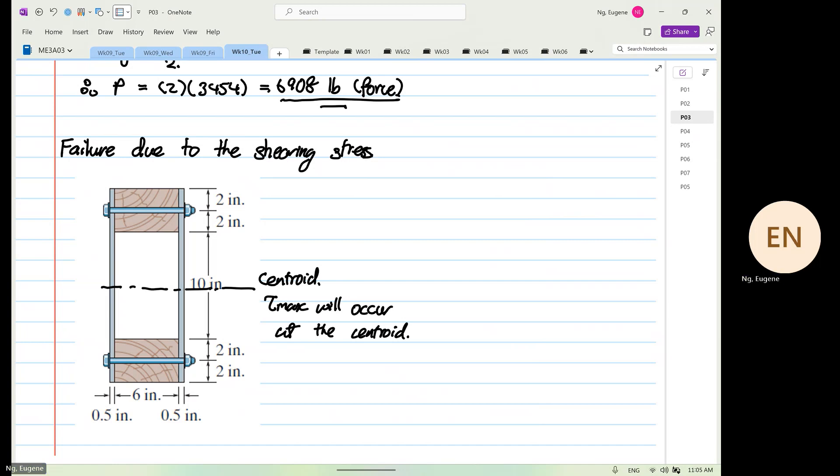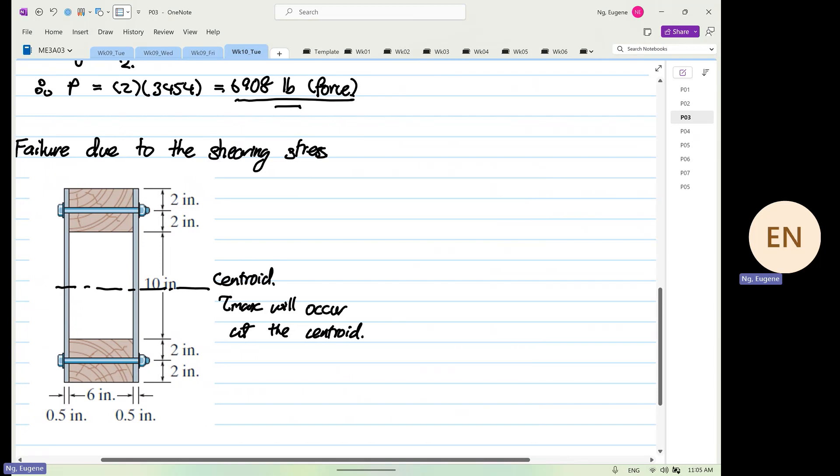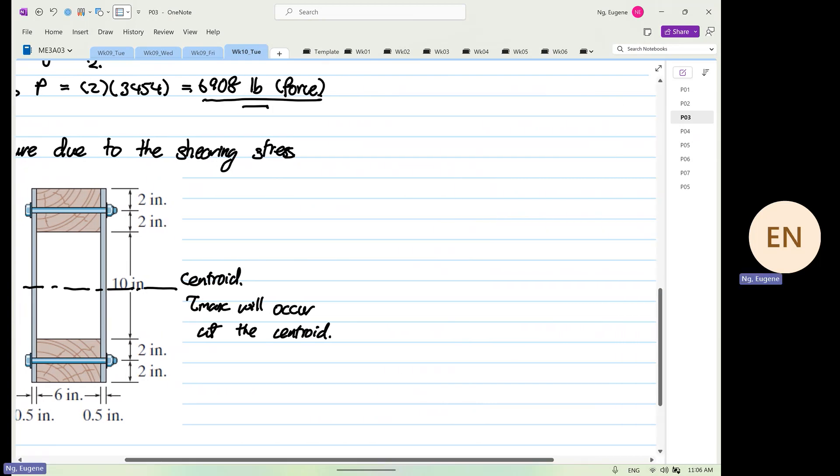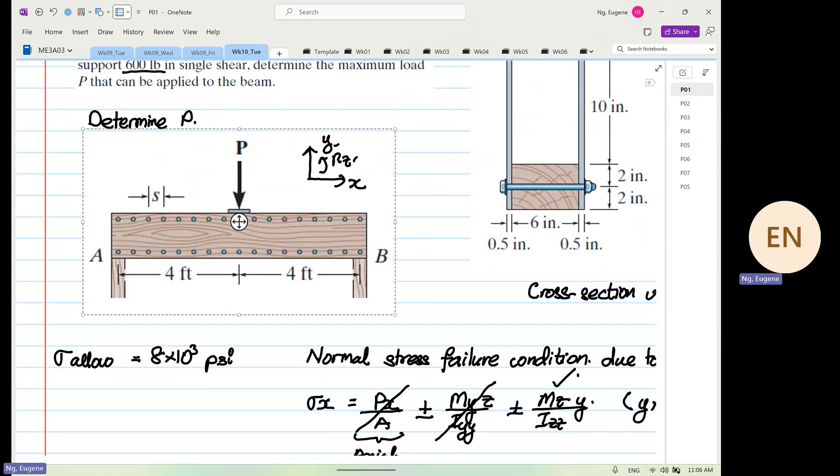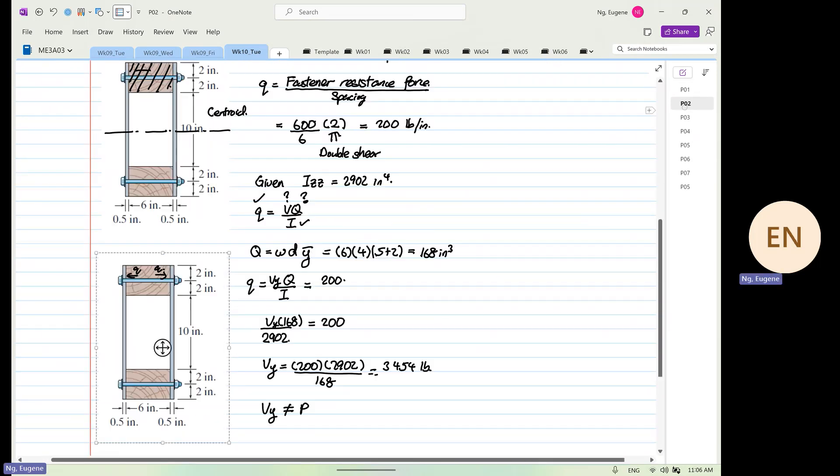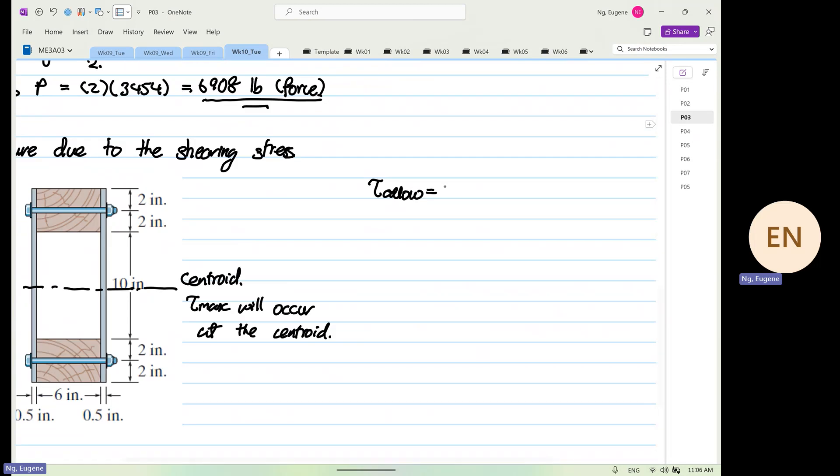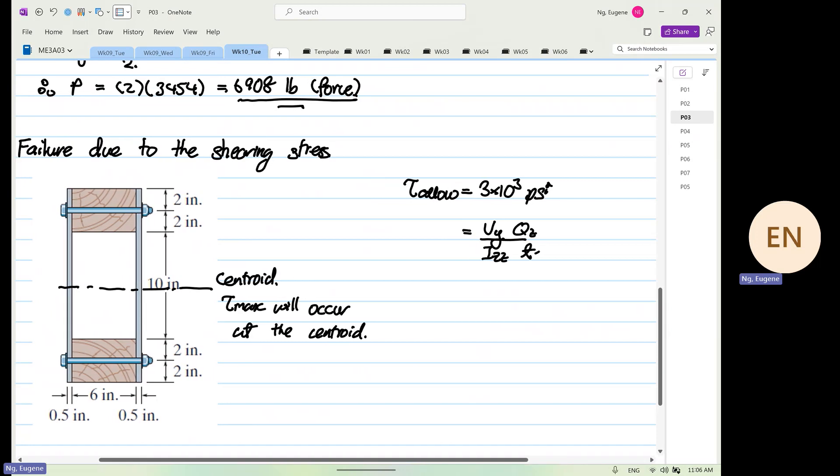So now the question is, what are we going to calculate? So the thing that we're going to calculate, we know that shear stress allowable is equal to what? So given to us, the shear stress allowable is 3 kilo per square inch, 3 times 10 to the power of 3 psi. And with this, the formula we're going to use is Vy over Izz, Qz divided by T.